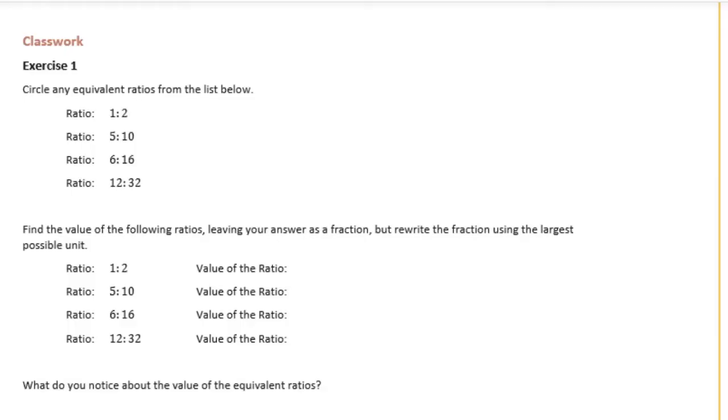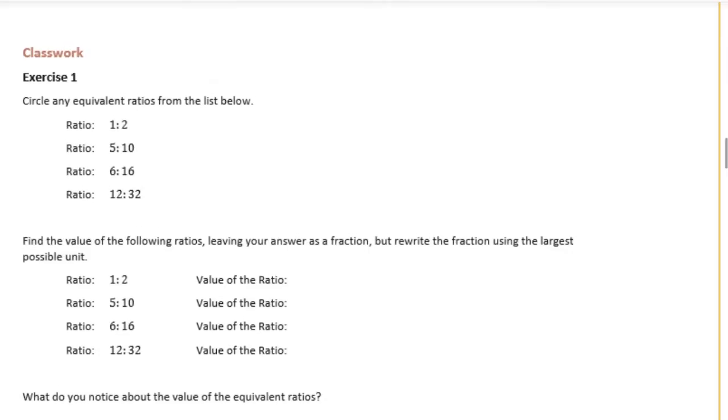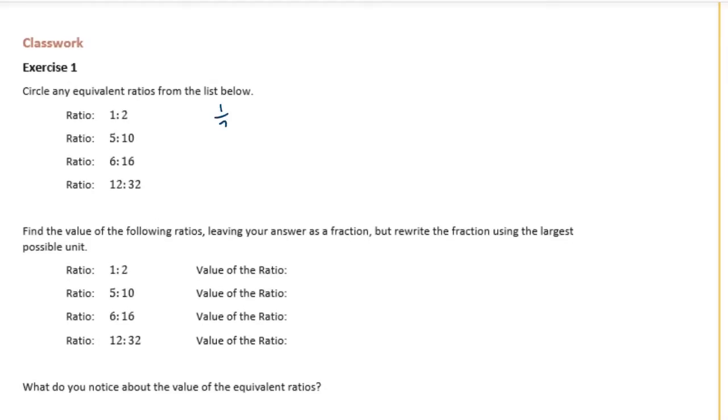So I find it easiest to take the ratios and turn them into fractions. So 1 to 2 is 1 half, and then I make that into the simplest form. 1 half is already in simplest form, so I'm going to leave that alone. Let's see if we can find one that's equal to that.